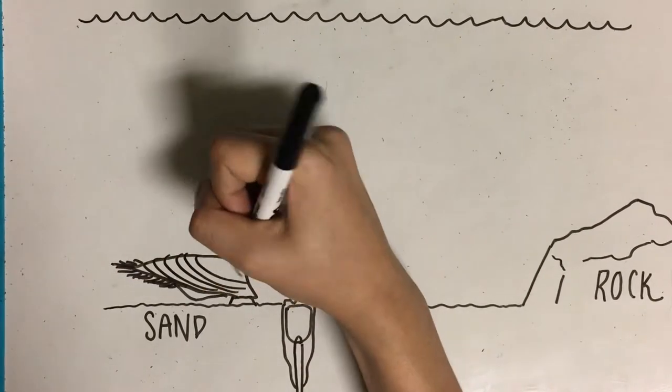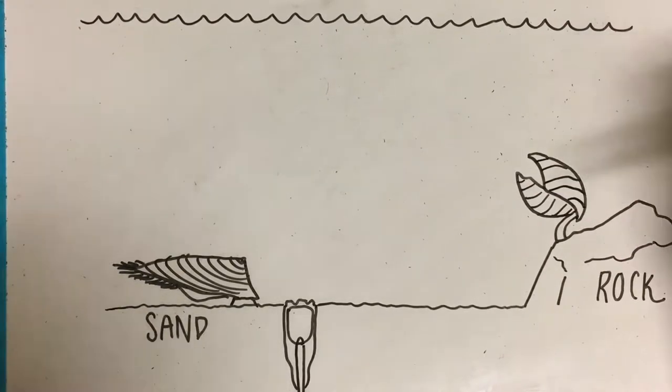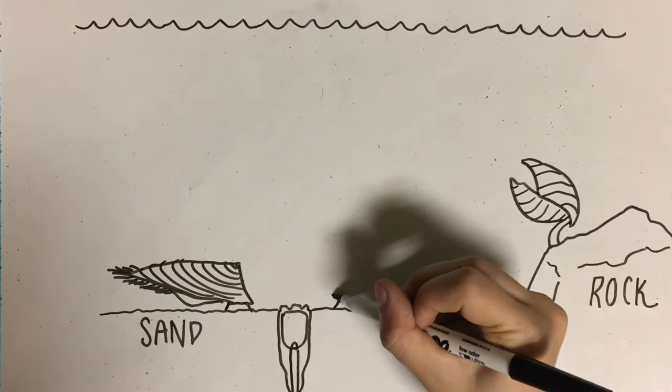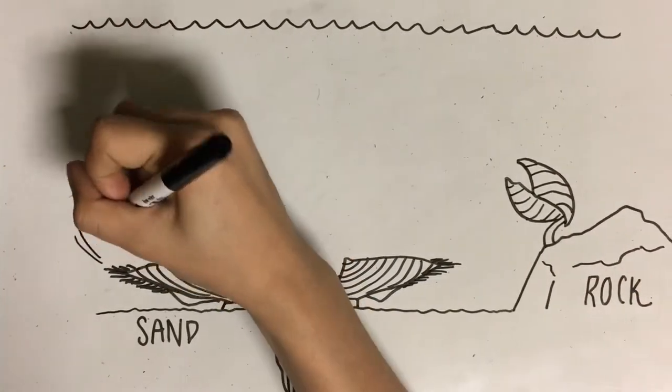Different species of brachiopods reproduce in different ways. Some species broadcast their spawn and fertilization takes place externally, while in other species, females take the sperm into their mantle cavity. A few species of brachiopods are also hermaphroditic.